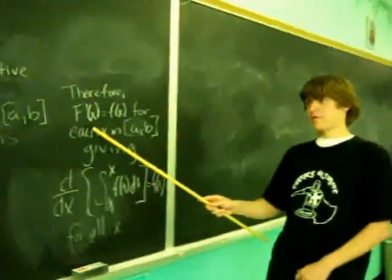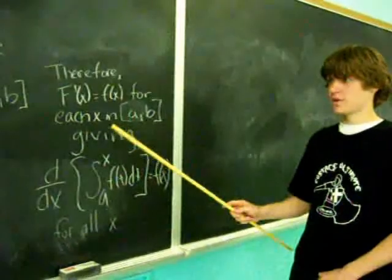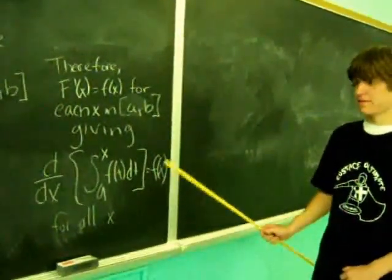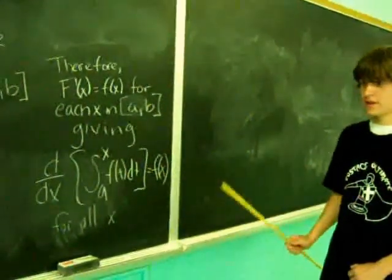Therefore, F prime of x equals f of x for each x in a to b, giving the derivative of the integral from a to x of f of t dt equals f of x for all x.